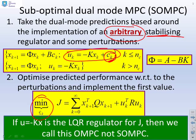There's a particular note here at the bottom which is quite important. If this K parameter, this feedback, is the LQR regulator for this J, then we're going to call this algorithm OMPC, not SOMPC, because in that case it won't be suboptimal.